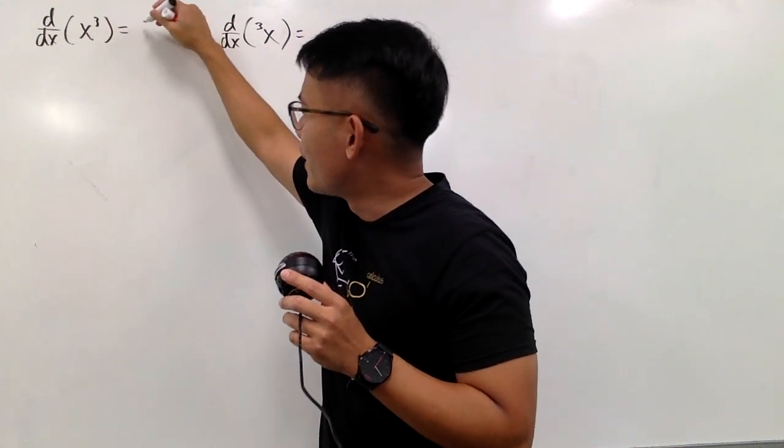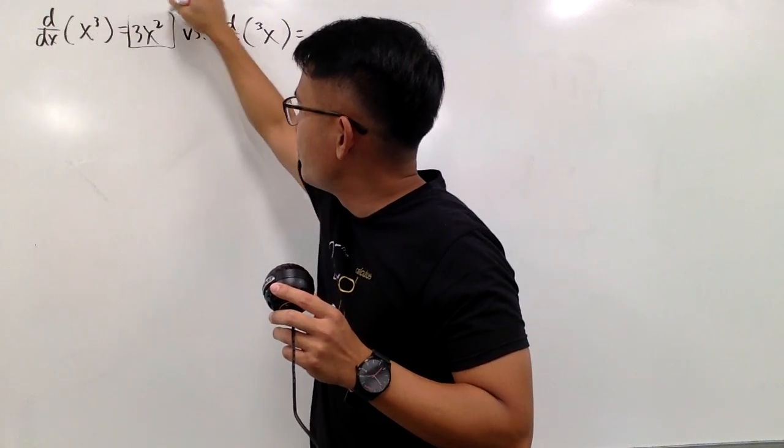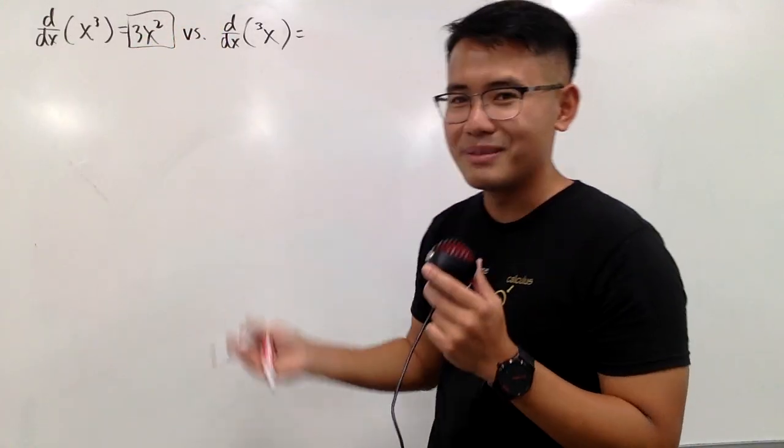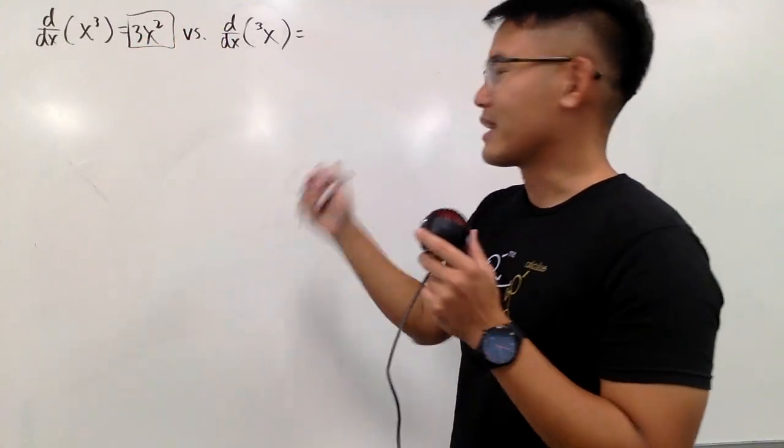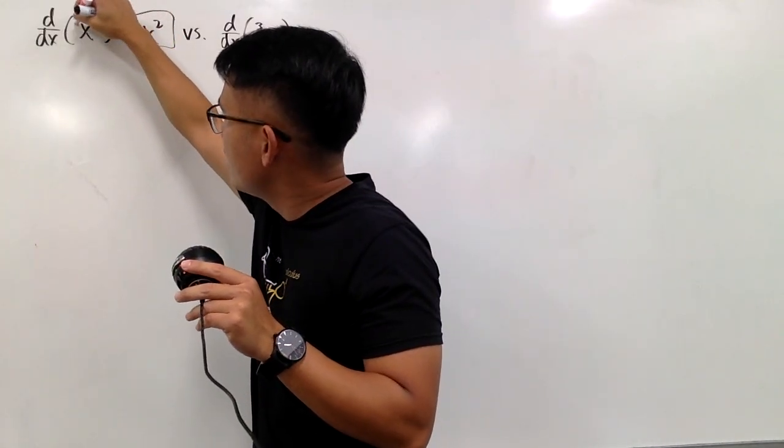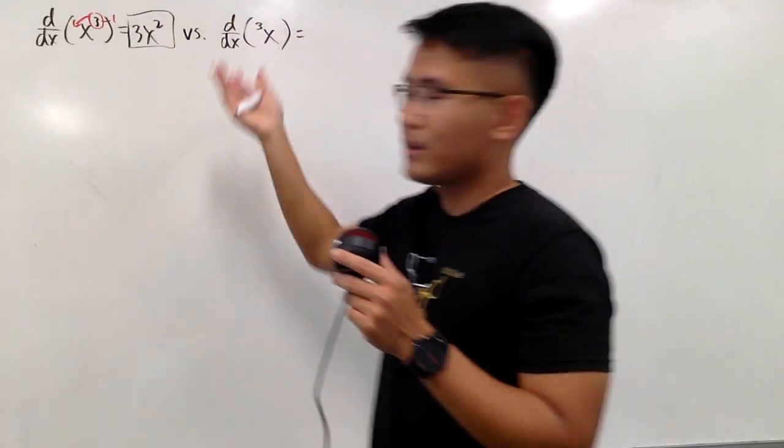The derivative of x to the third power is, of course, 3x squared. And if I put like 20 of these questions on the final exams, then my students will be going crazy because I'll be like the best teacher ever. Anyway, if you want to show work, you can bring this 3 to the front and then minus 1. That's kind of cute, yeah?